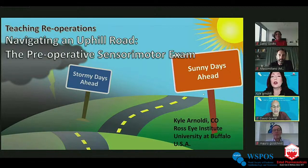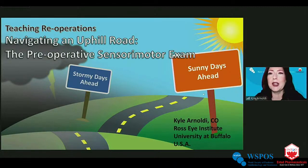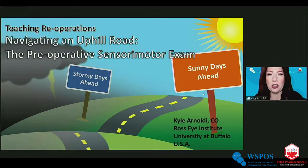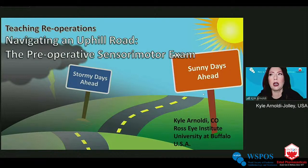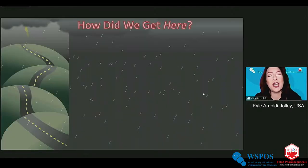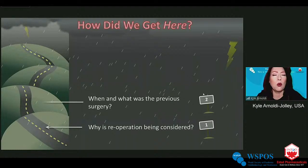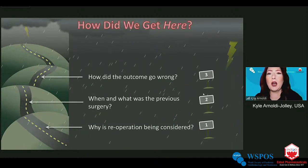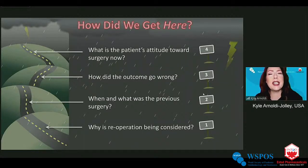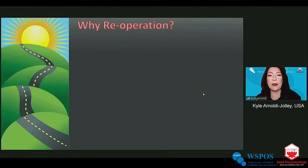When it comes to the examination of a re-operated patient, everything from the previous webinar on teaching strabismus surgery still applies, but for a re-operation there are a few added layers of complexity. Today I'm going to share my approach to a re-operation, specifically answering: why is re-operation being considered at all? When was the previous surgery and what was done? How did the outcome go wrong? And what is the patient's attitude towards surgery now?